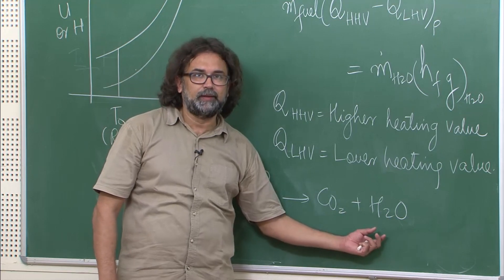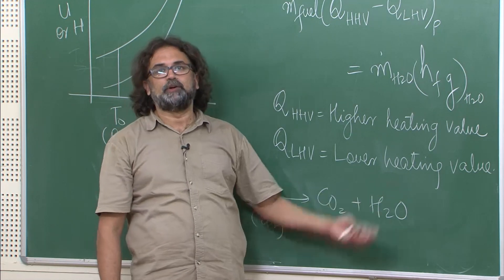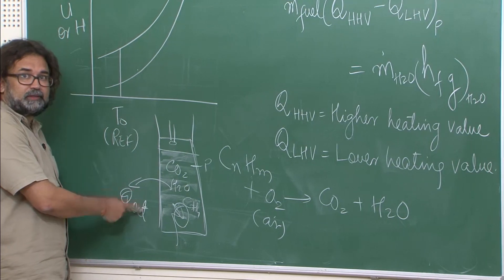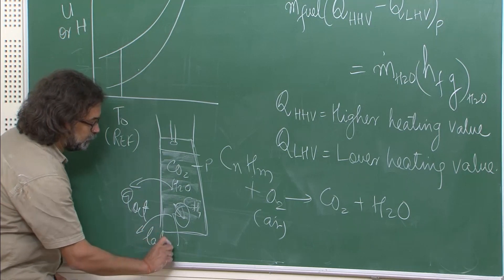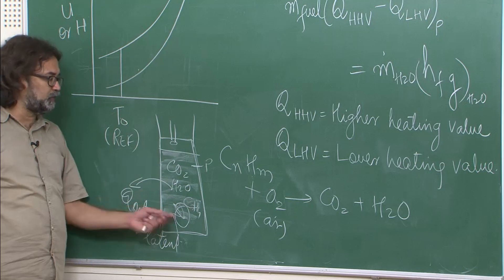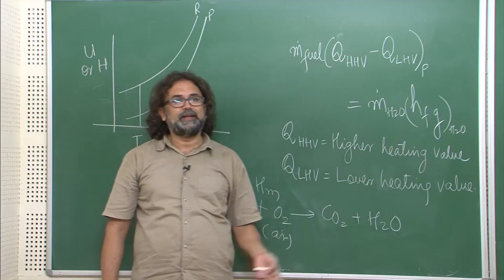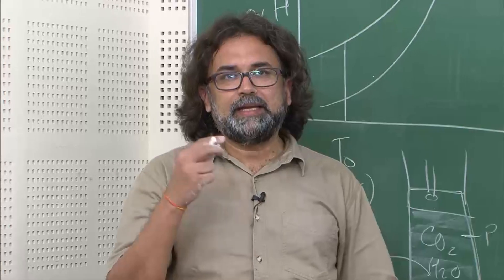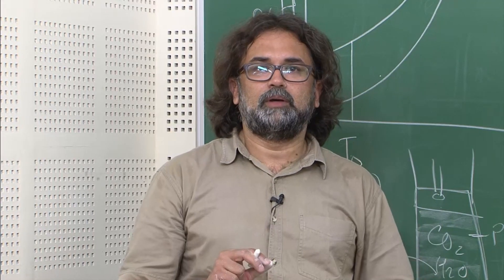If the steam converts to liquid, then the latent heat corresponding to that amount of condensed steam is actually available to you for doing positive work. The Q out can increase if the steam gets condensed, because that extra latent heat which was hidden in the steam is now coming out. When that happens, naturally that value will be called the higher heating value — it corresponds to the condition where the steam contained in the combustion products is condensed and you are getting some extra heat.